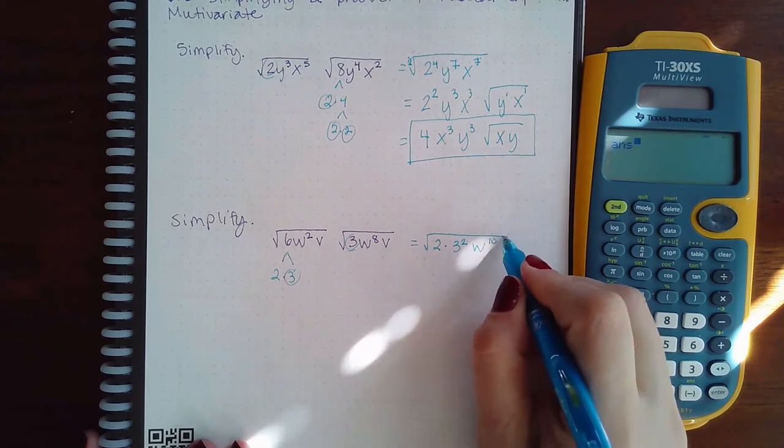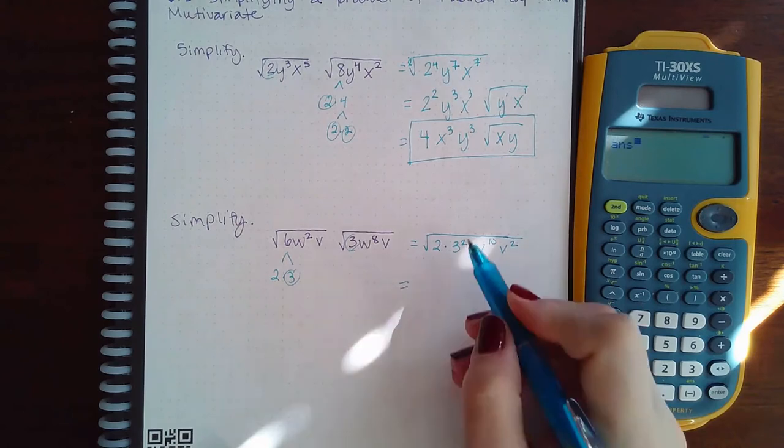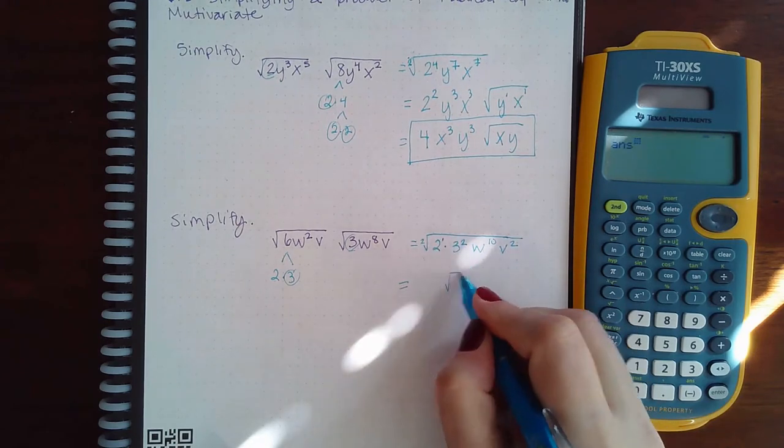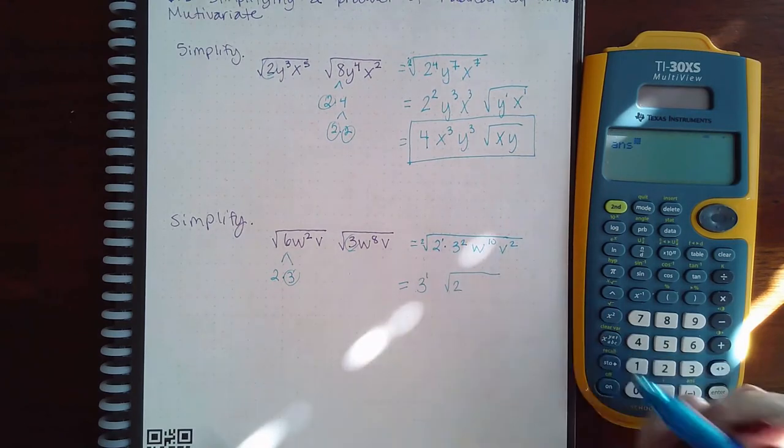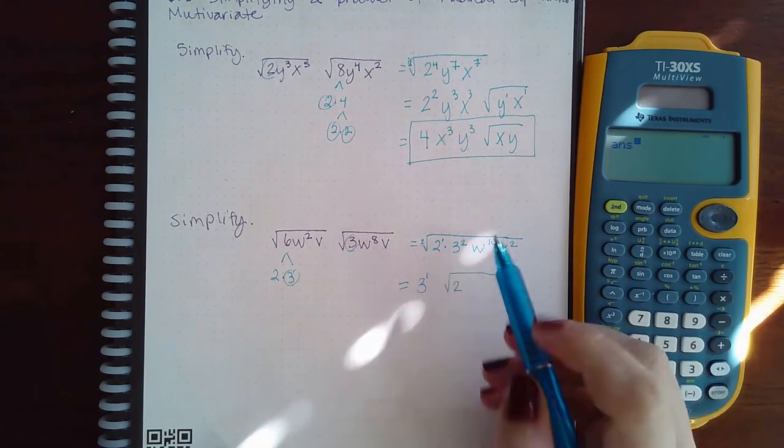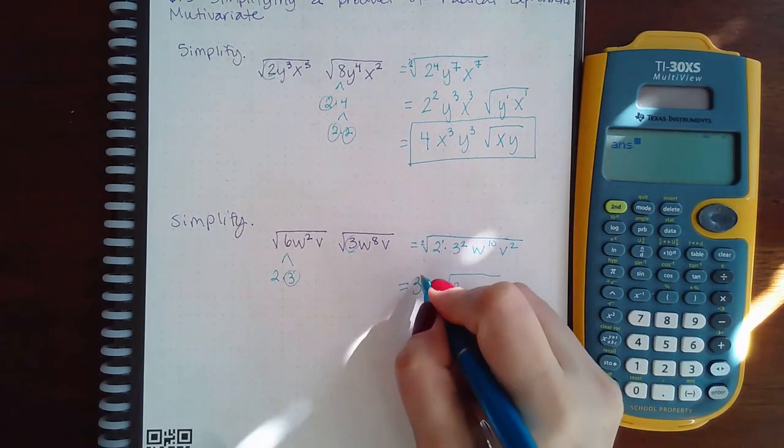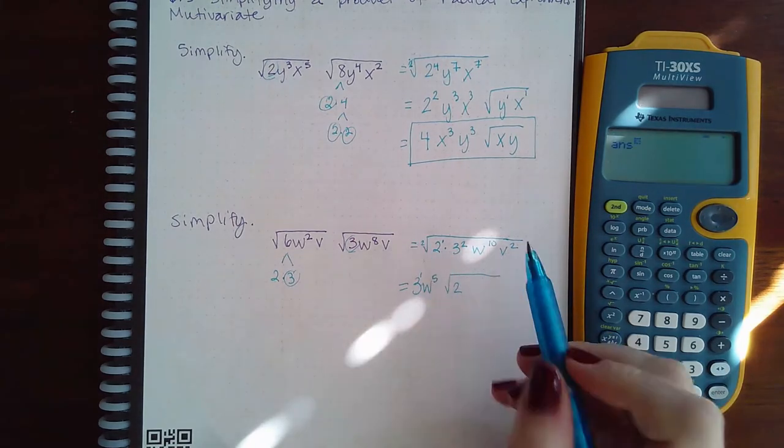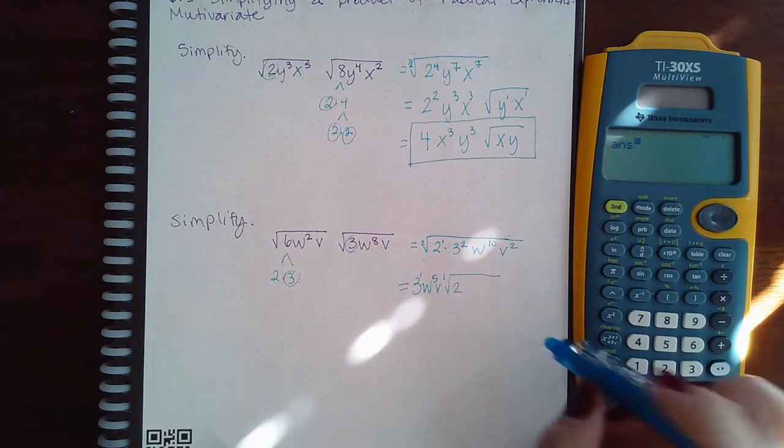2 does not go into 1 so I will still have a 2 inside. 2 goes into 2 one time evenly so none are still left inside. 2 goes into 10 five times with none left over, so I will not have any w's left inside. 2 goes into 2 one time and nothing, no v's left over inside.